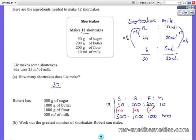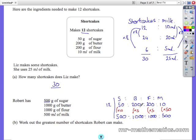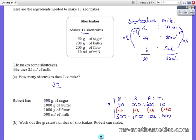So you can see in your workout, you can work out 10 times as much sugar but 5 times as much butter. So the most you can make in total keeping equivalent ratios is 5 times as much, and 5 times 12 is 60, so you can make 60 shortcakes in total.